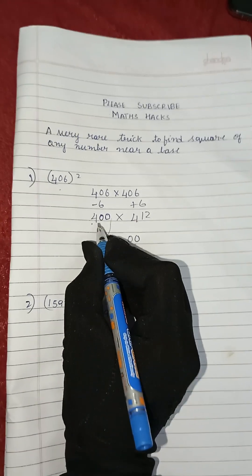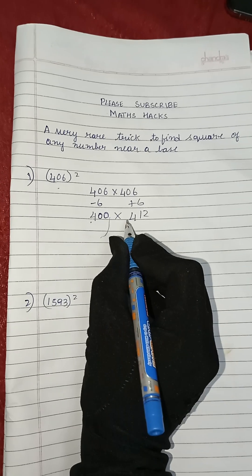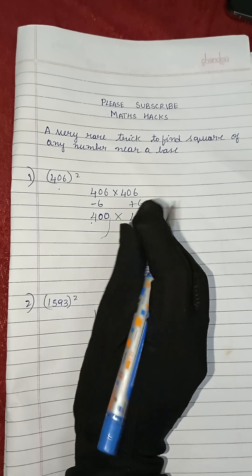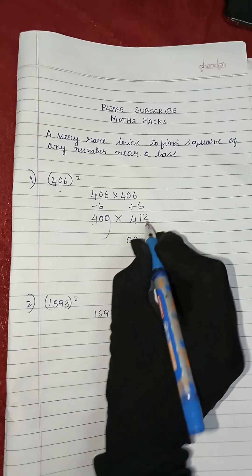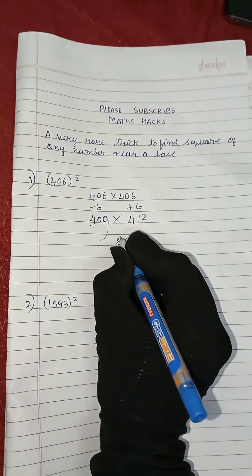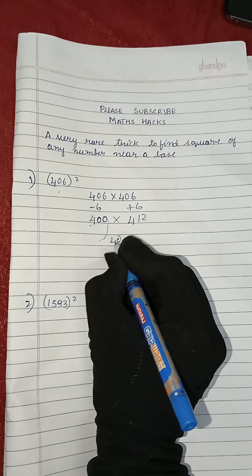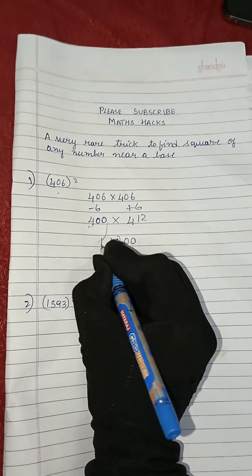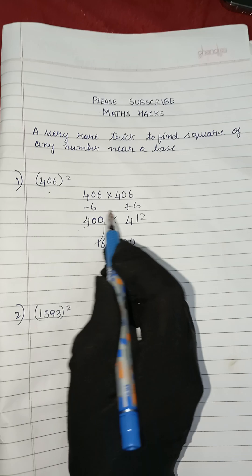Now we will multiply 412 into 4. So 4 into 412 gives you the answer 1648. 2 fours are 8, 1 four is 4, 4 fours are 16. Done.